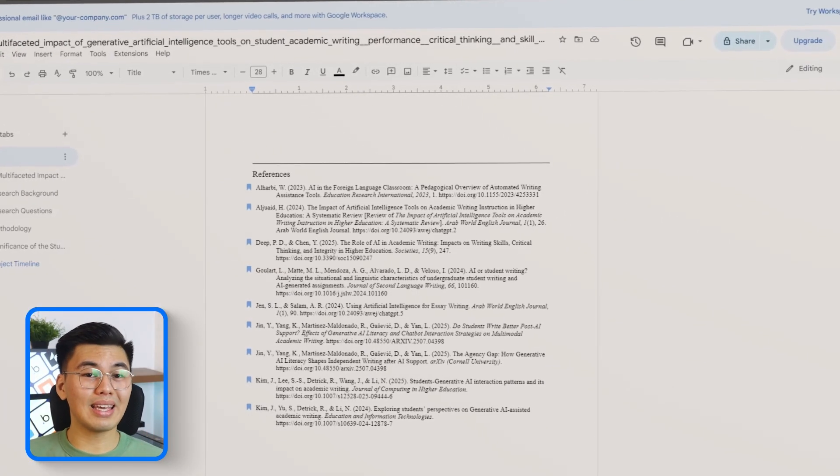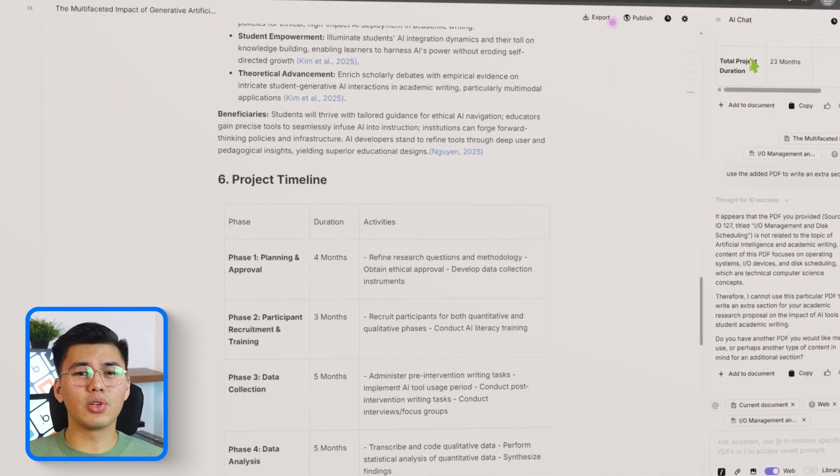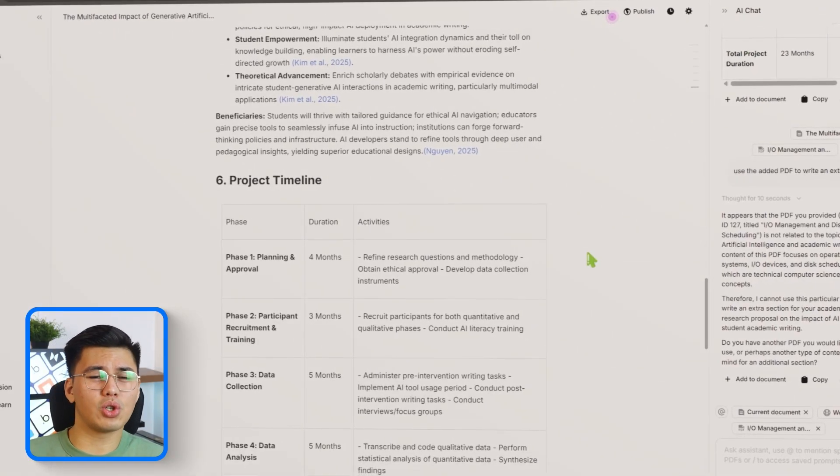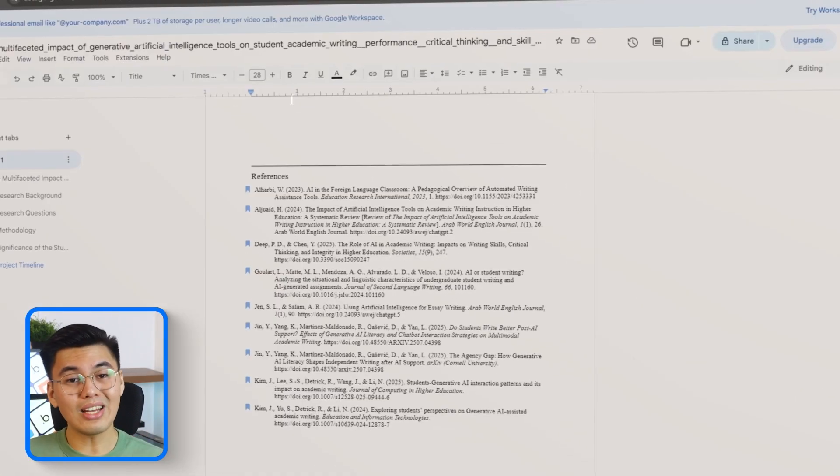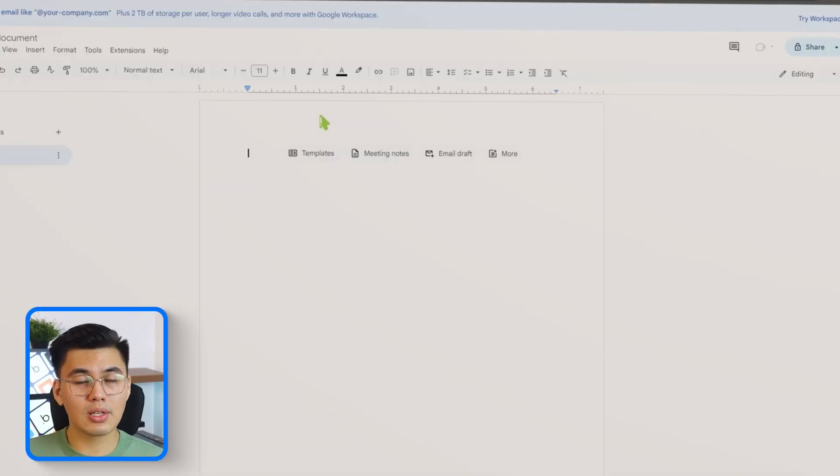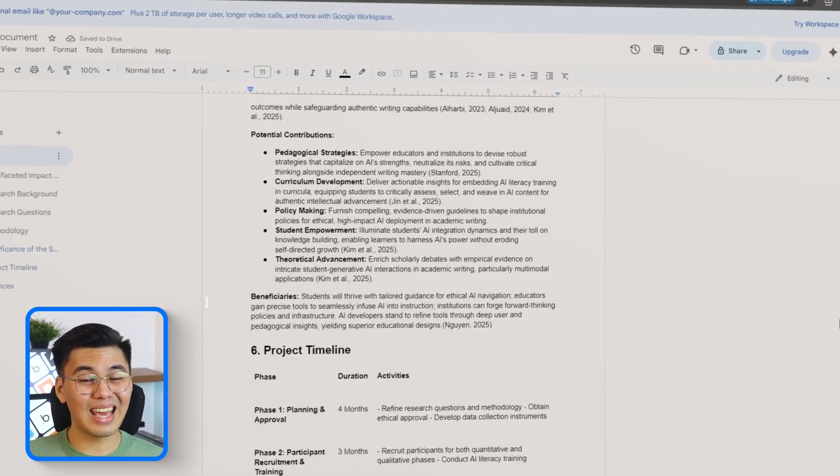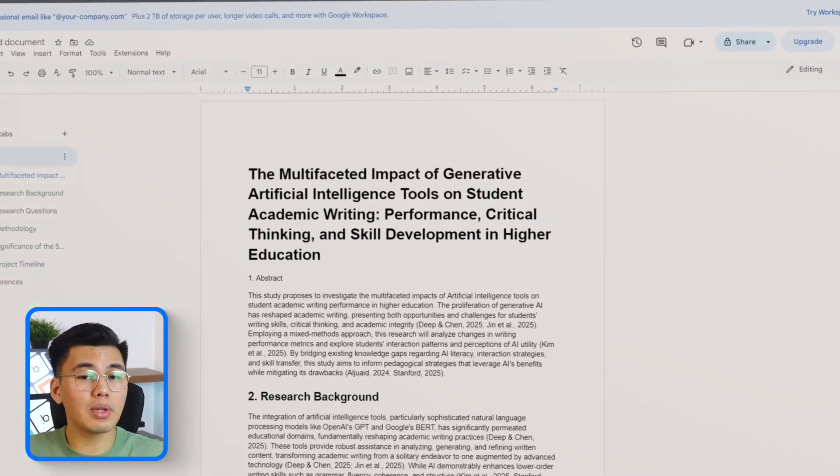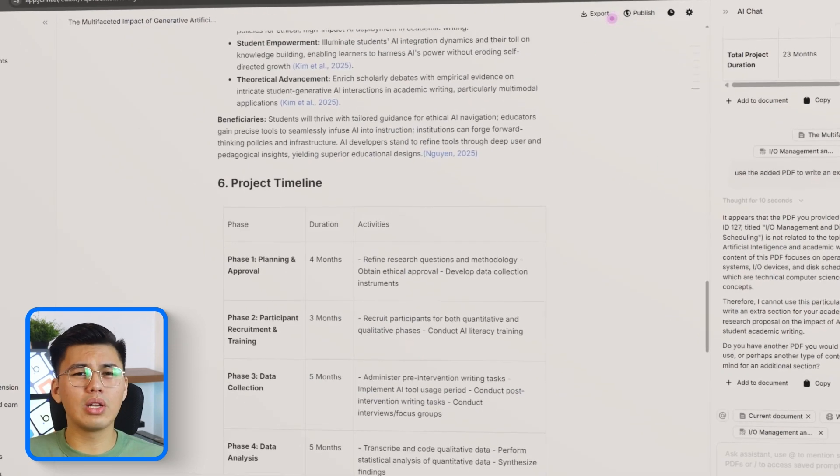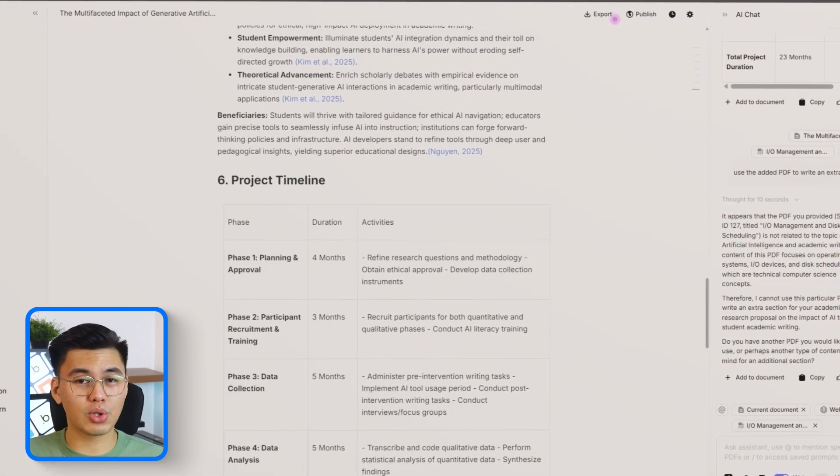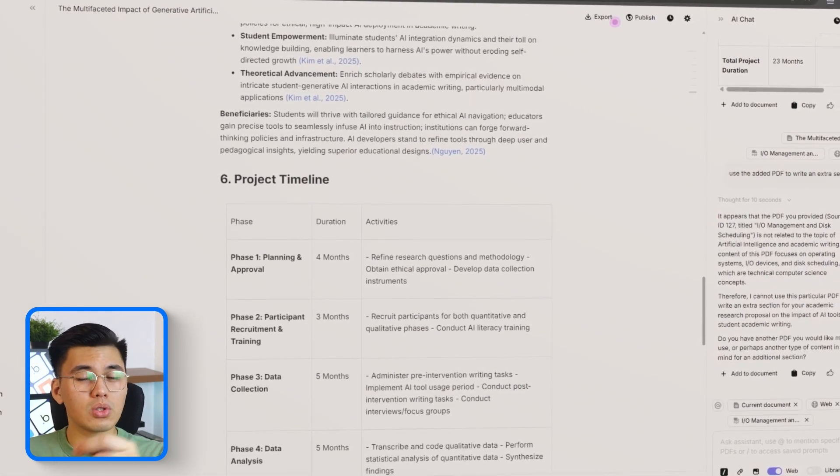But the great thing is, this isn't a one-and-done situation. As your research evolves, if your questions shift, your methodology changes, or you find new sources, you can jump back into Jenny.ai and regenerate or update any section instantly. No need to rewrite huge chunks from scratch, you just refine what's already there.